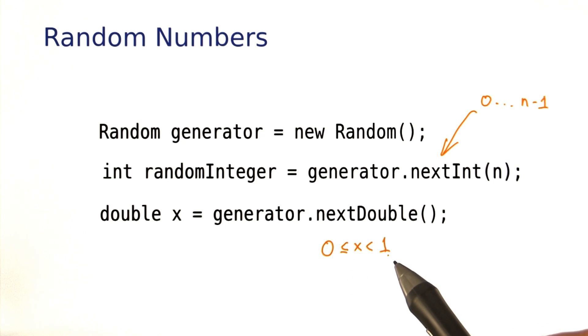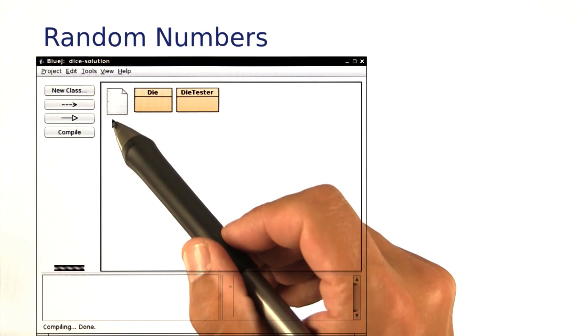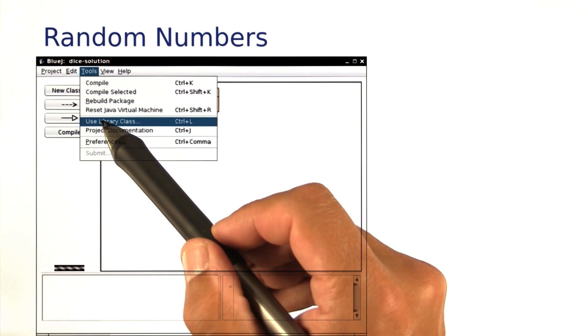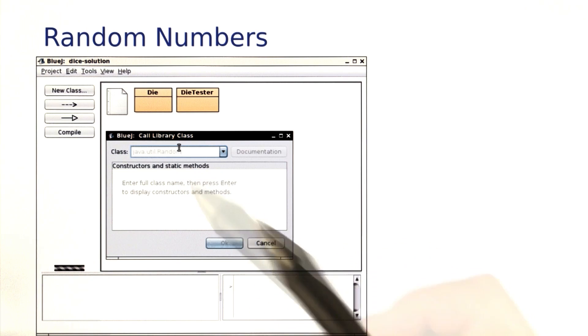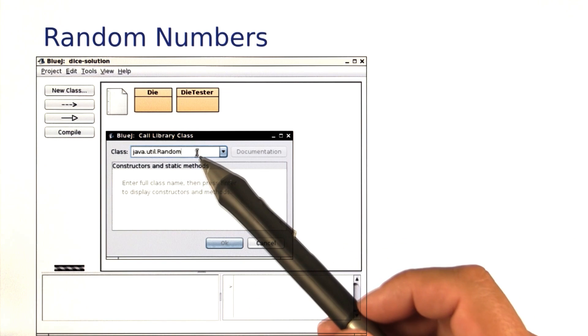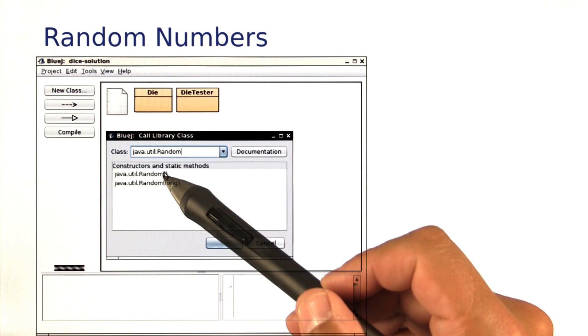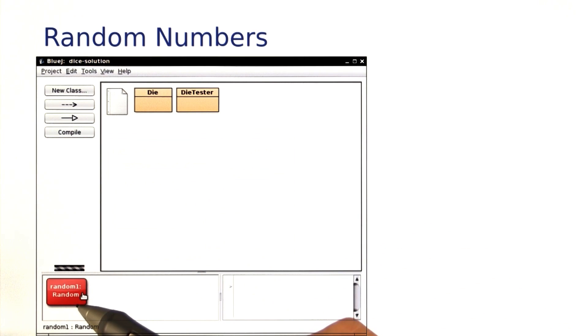Let me show you the random number generator in BlueJ. Let's make an object by going to the tools menu, use library class, and here in the class field, we type in Java dot util dot random, and hit the enter key. Select this constructor, and here we have a random number generator.